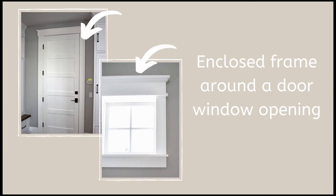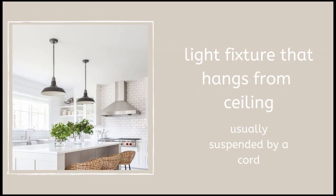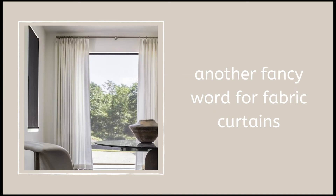Casing is an enclosed frame around a door or window opening. A pendant is a light fixture that hangs from the ceiling, usually suspended by a cord.